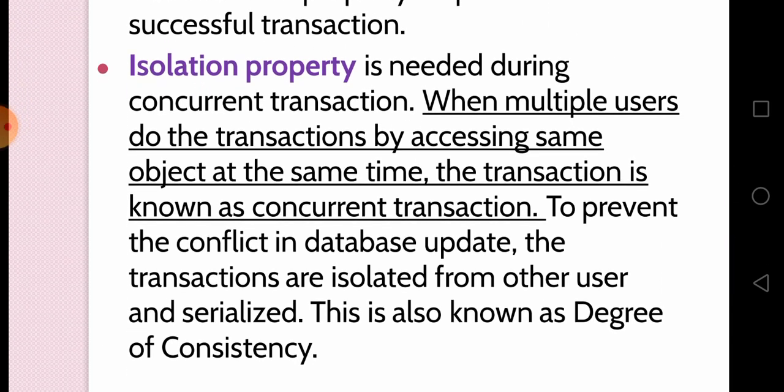Next, we move to the Isolation property. When multiple users are doing a transaction by accessing the same objects at the same time, that transaction is known as a concurrent transaction. To prevent conflict, database update transactions are isolated and serialized with other users. This is known as the degree of consistency. In isolation, multiple users do transactions by accessing the same object at the same time.